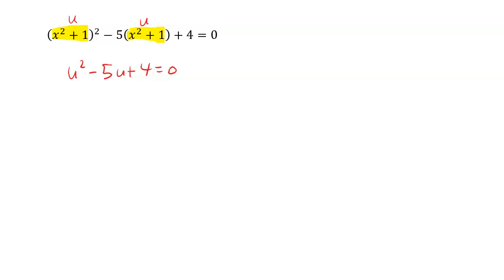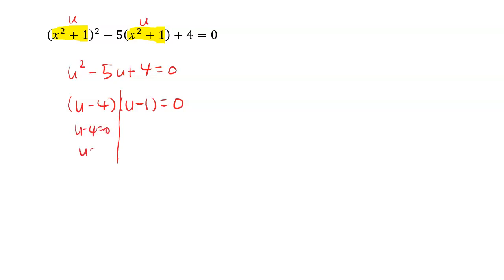We can even factor this easily because 4 times 1 is 4, and 4 plus 1 is 5, so u minus 4 times u minus 1 equals 0. You get u equals 4 and u equals 1.